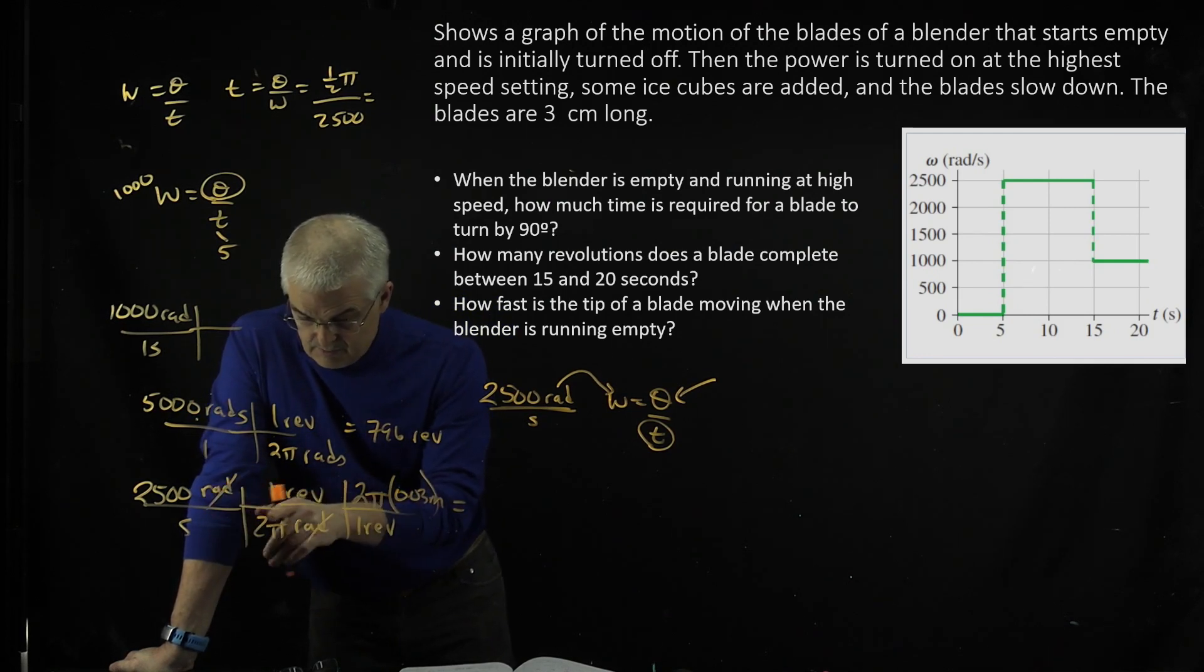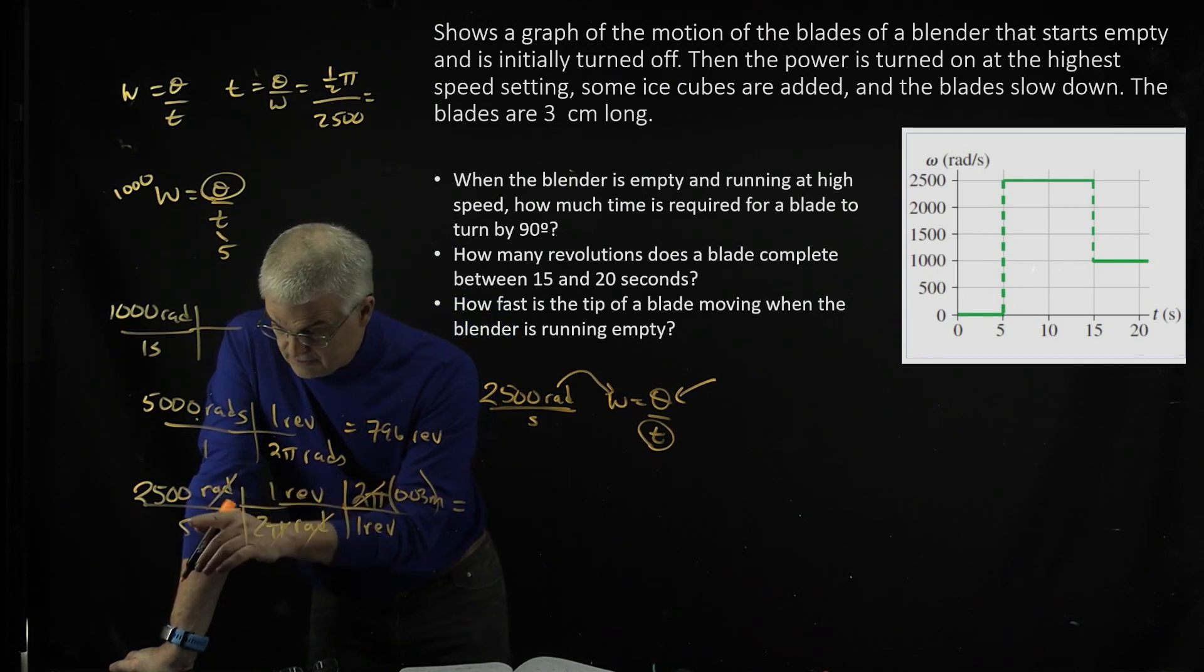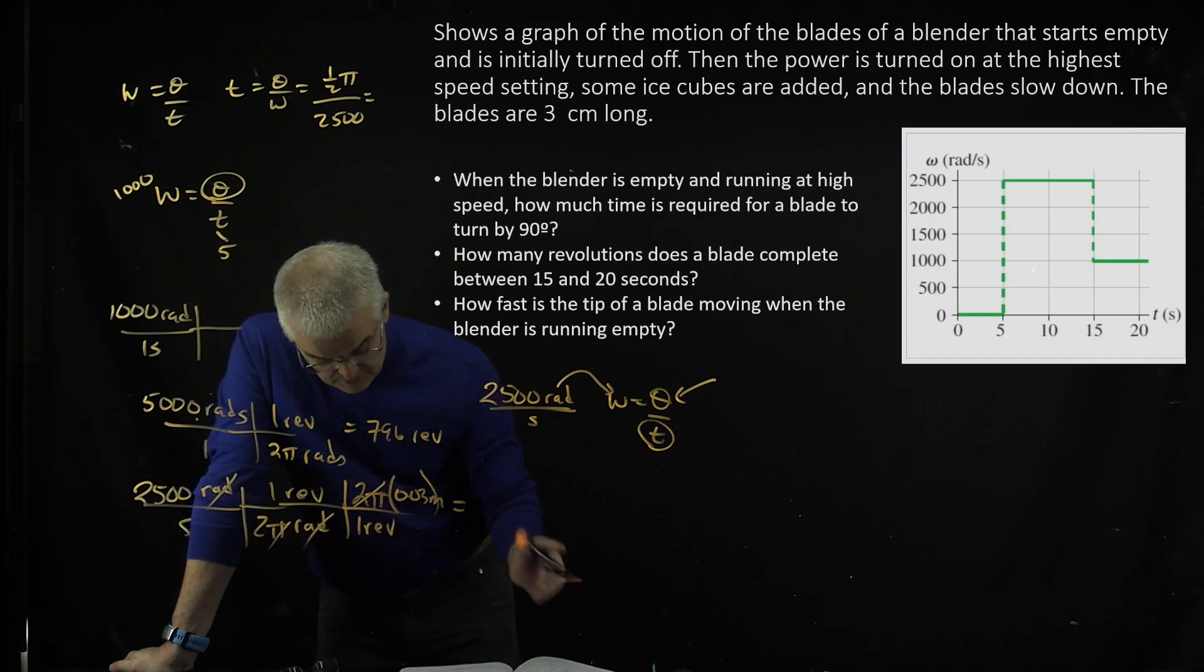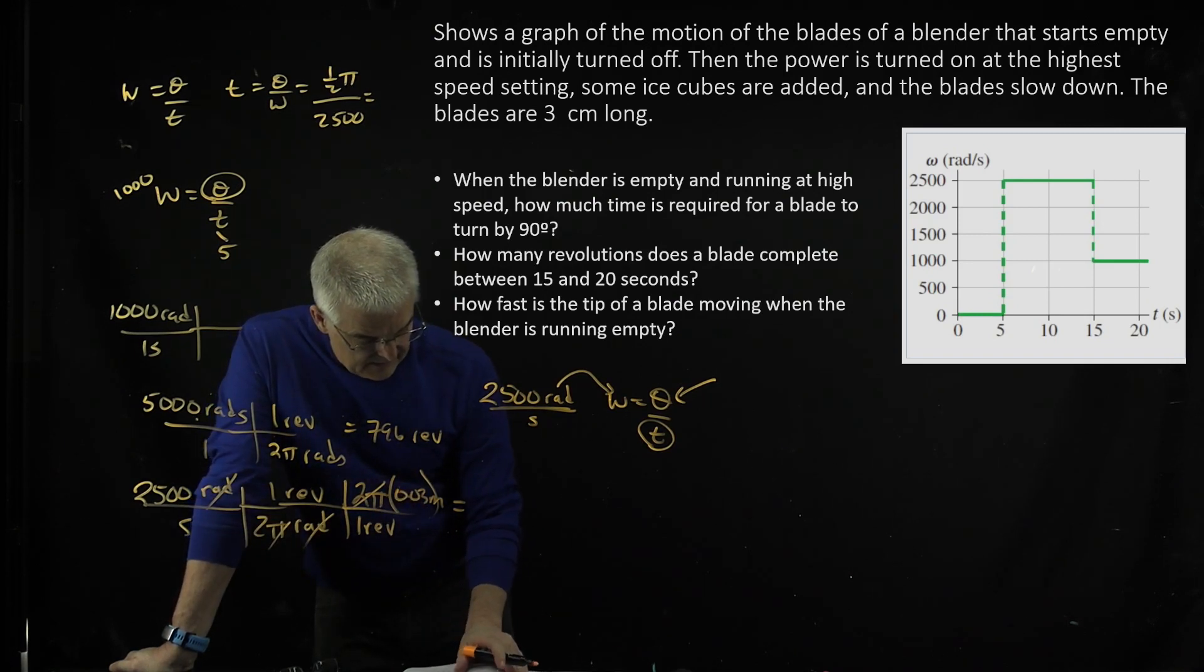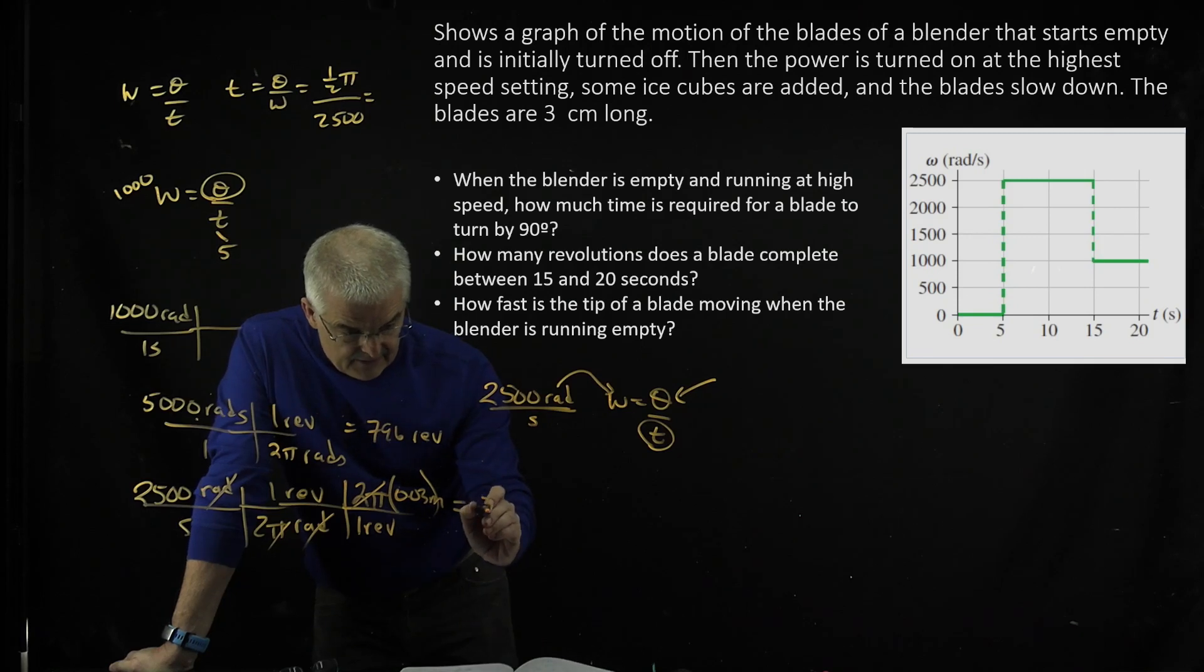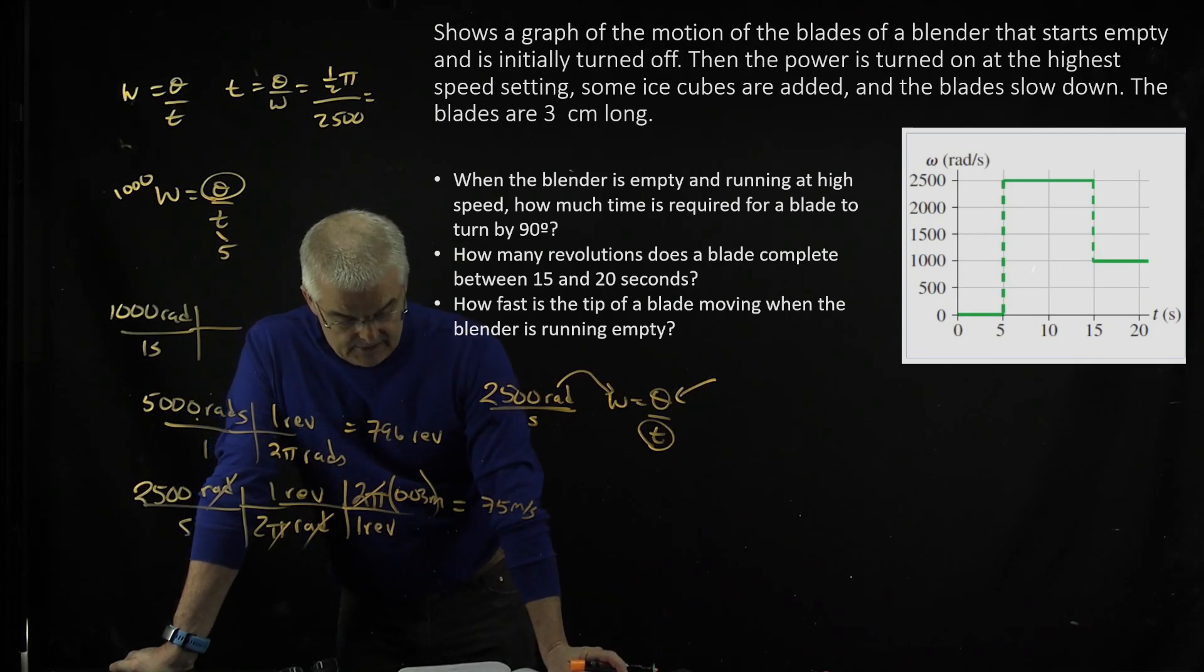And so I just do the math. As a note, the 2π's cancel. So it's going to be 2,500 times 0.03. And I get 75 meters per second. Houston, we know a problem.